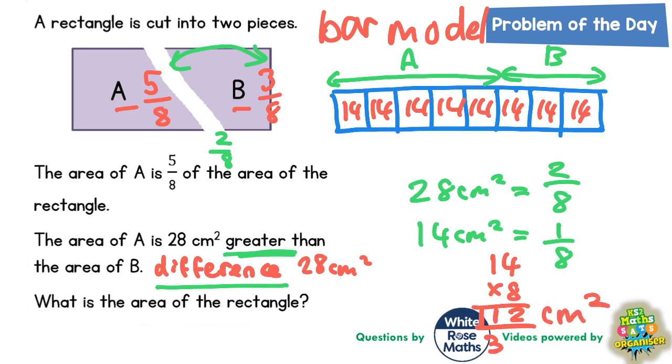So the final area of the rectangle is 112 centimeters squared. But before we move on, it might be an idea just to double check that this all makes sense by looking at the separate areas too.